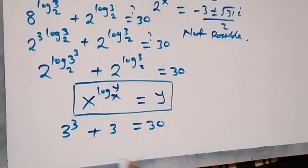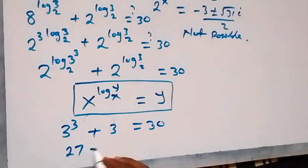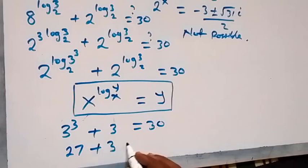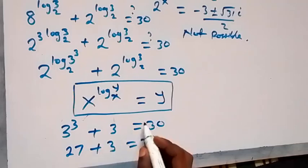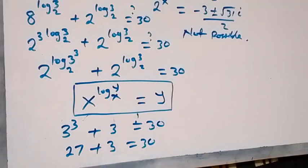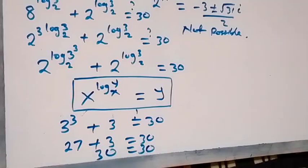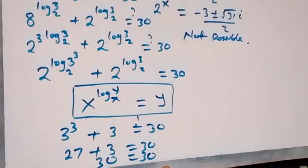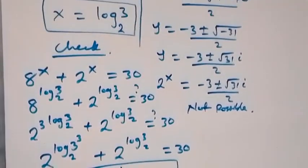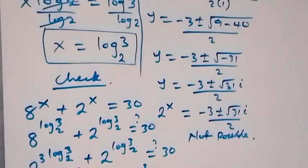So we have 3 raised to power 3, which is 3 times 3 times 3, that's 27, plus 3, equals to 30. And 27 plus 3 is of course 30, so we have 30 equals to 30. The left-hand side equals the right-hand side, and we can conclude that x equals to log 3 base 2 satisfies the given problem.